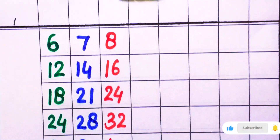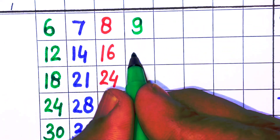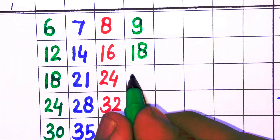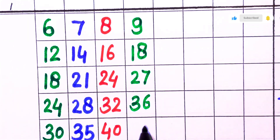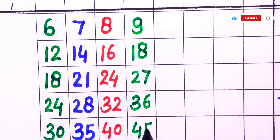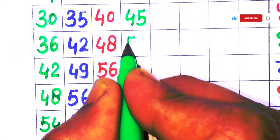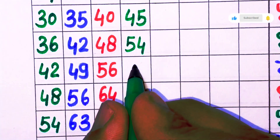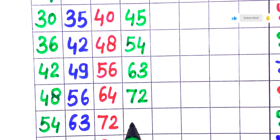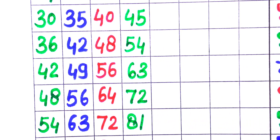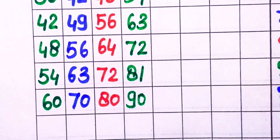Next: 9. 9 × 1 = 9, 9 × 2 = 18, 9 × 3 = 27, 9 × 4 = 36, 9 × 5 = 45, 9 × 6 = 54, 9 × 7 = 63, 9 × 8 = 72, 9 × 9 = 81, 9 × 10 = 90. Next: 10.